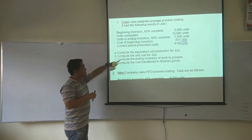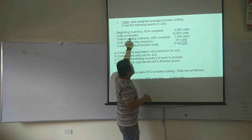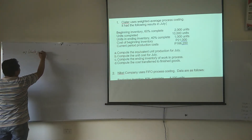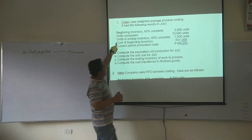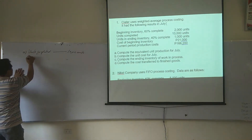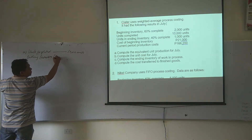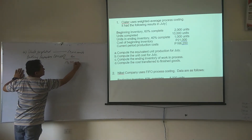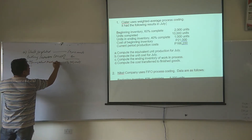So our solution for Problem A would be: units completed for the period — 10,000 units. Then we have ending inventory which is 40% completed. So we have ending inventory: 1,000 times 40%. So that's 400. Our equivalent units of production total is 10,000 units.